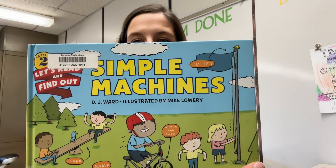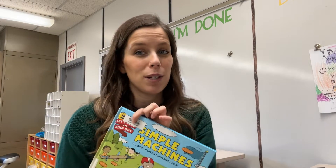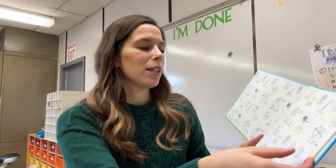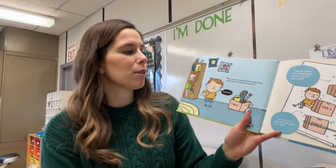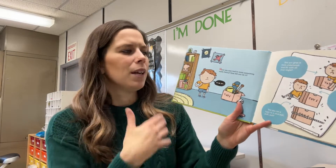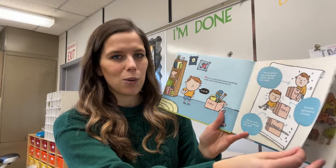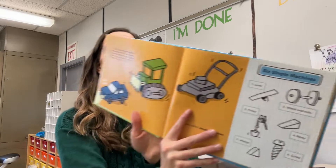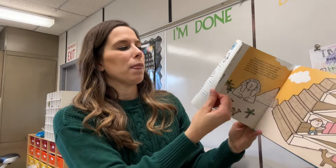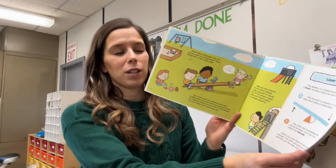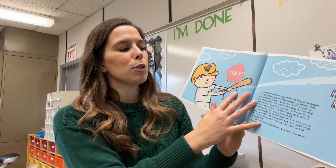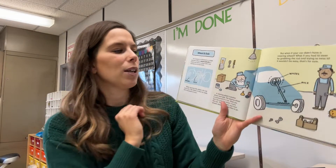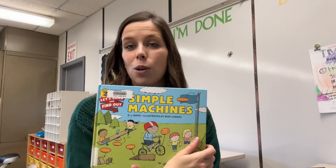The first one I have is Simple Machines by DJ Ward. I love this 'Let's Read and Find Out' series — I recommended it in my previous video too. I love their illustrations and the way they write things out. It starts off by saying 'Have you ever had to move something really heavy? How did you do it?' It invites kids to think about how simple machines can really help them in their lives. It introduces them to the six simple machines, and this is for sure the very first book I would grab to introduce students to the simple machines part of your energy unit in grade three science.